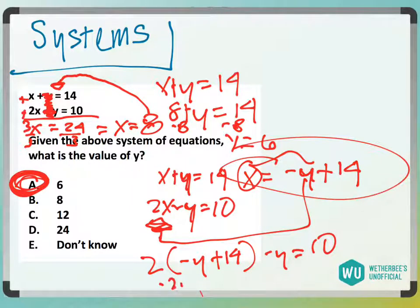And I'd get negative 2y plus 28 minus y equals 10. And then I would get negative, so I'd combine these negative y's. Let me actually move it over here.